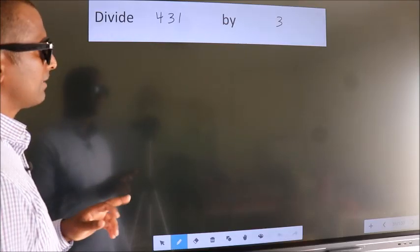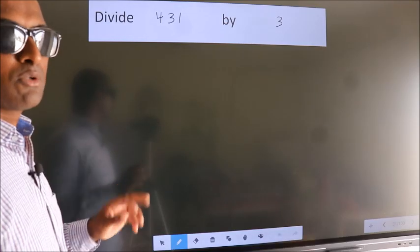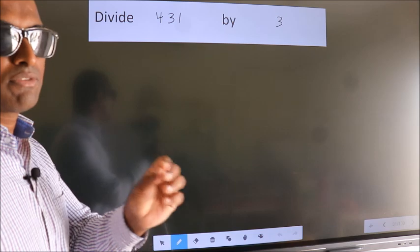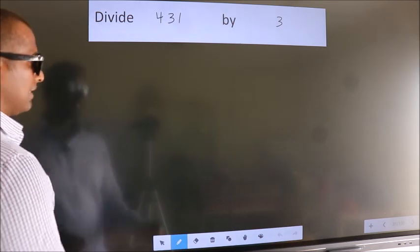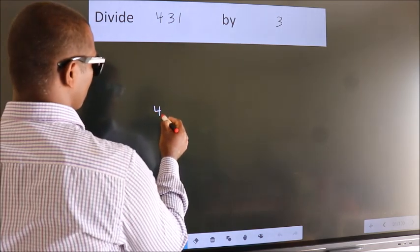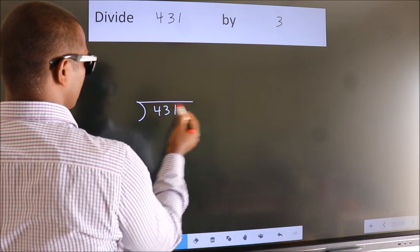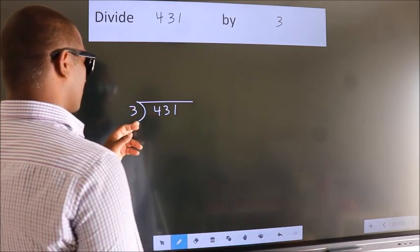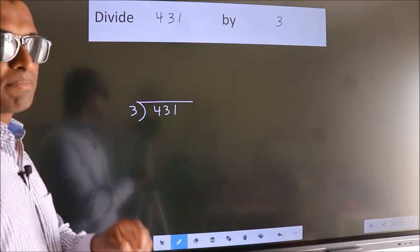Divide 431 by 3. To do this division, we should frame it in this way. 431 here, 3 here. This is your step 1.